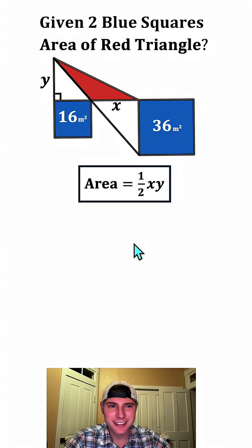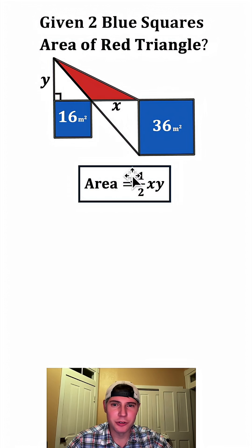So this is what we're trying to figure out. Next, let's use the areas of the blue squares. If this one has an area of 16, each side will be equal to 4. And if this one has an area of 36, each side will be equal to 6.